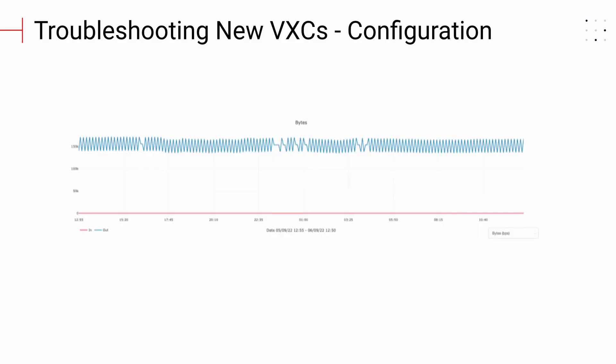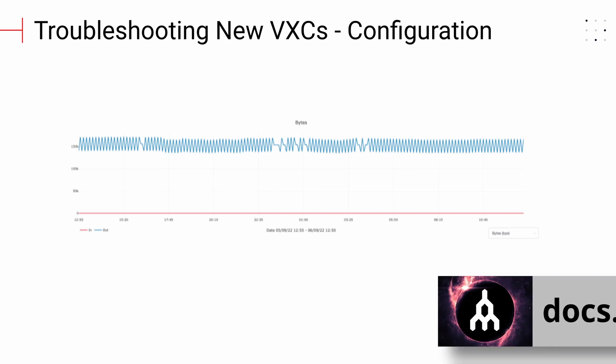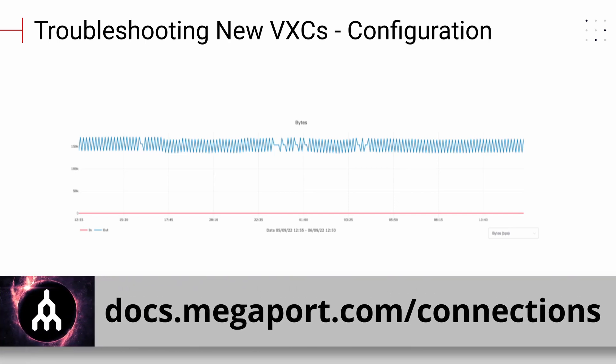One of the most common problems with new VXEs is incorrect configuration. This will often appear as a successfully deployed VXE, but there may be traffic in just one direction. This may be caused by an issue with BGP establishment, VLAN configuration, or other incorrect configuration settings. If your new VXE fails to transmit or receive traffic as desired, please review our configuration guides. They can be located at docs.megaport.com/connections.